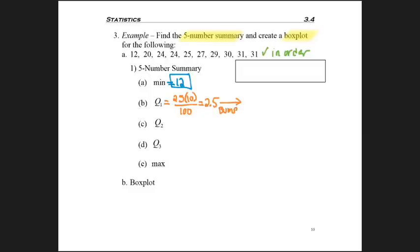Since I got 2.5 and it's a decimal, remember I have to bump to the next whole number, which is three. And I need the third entry in the list. And as I count across, I find that it's 24. The second number in my five number summary is 24.